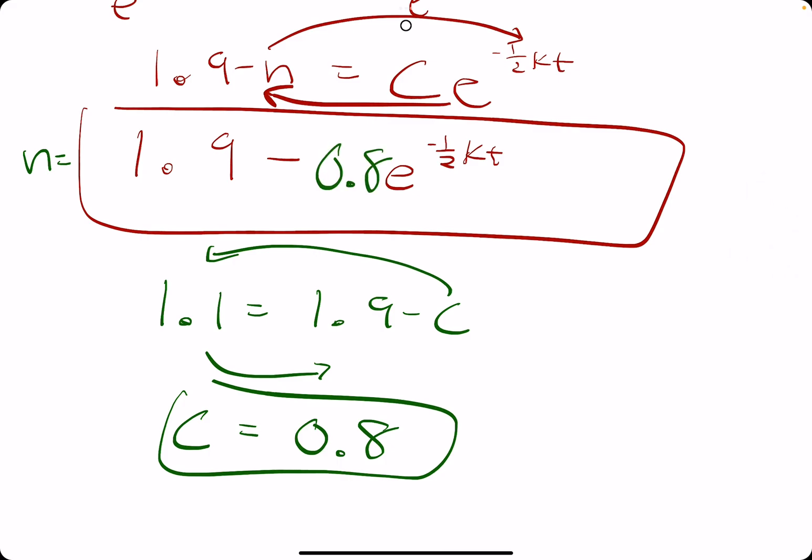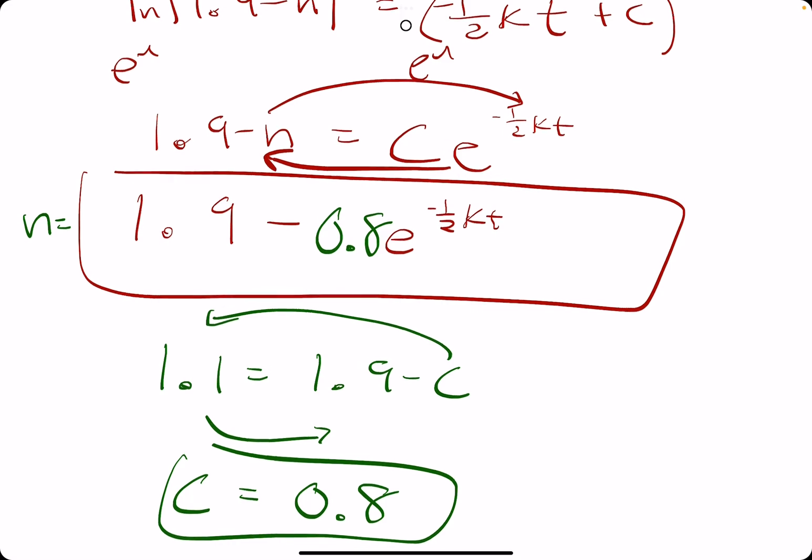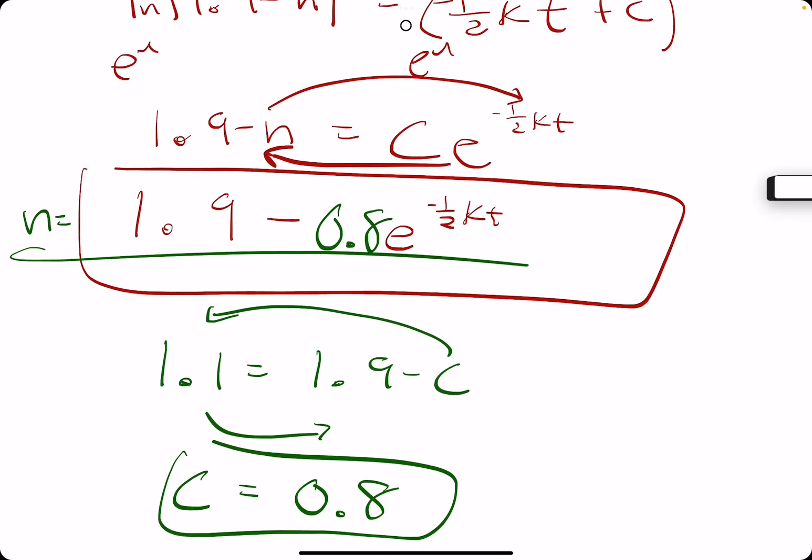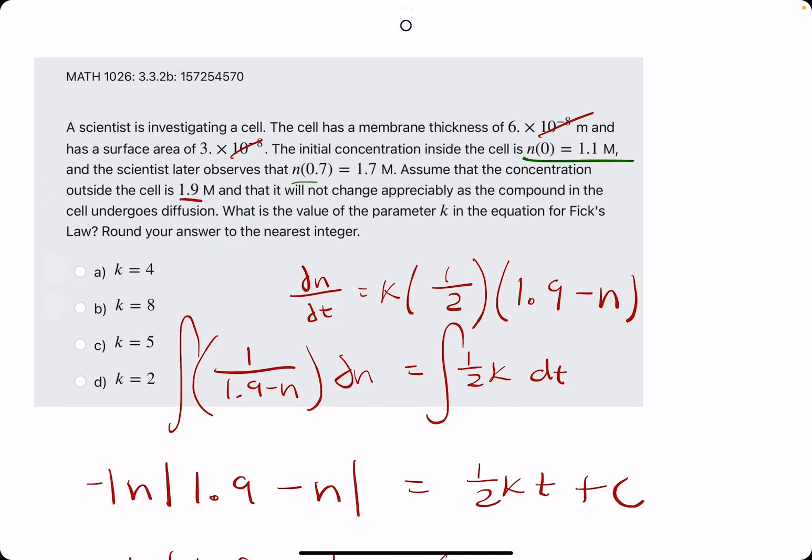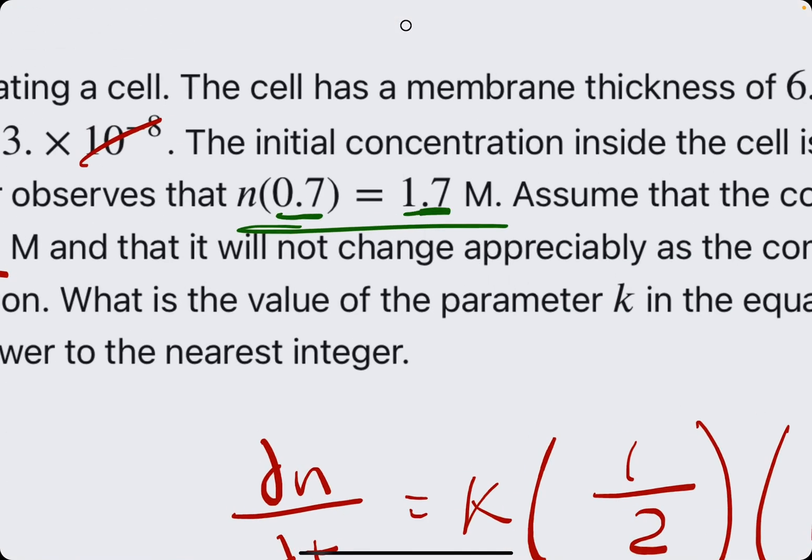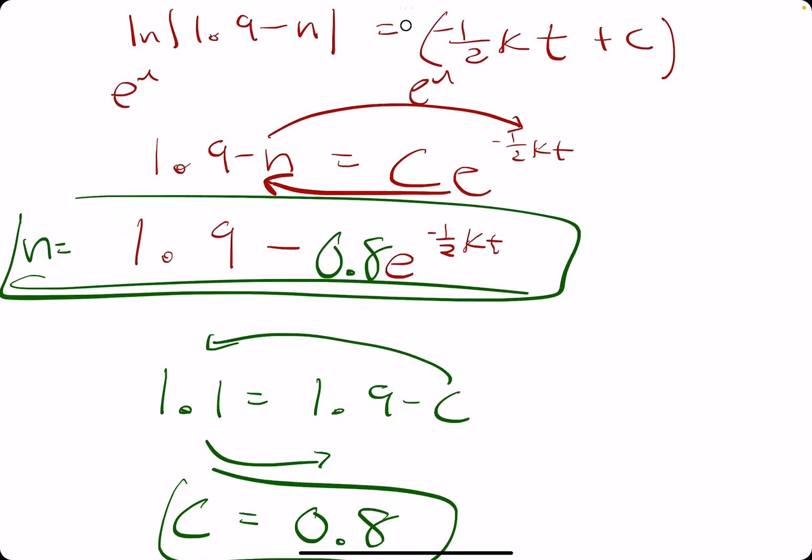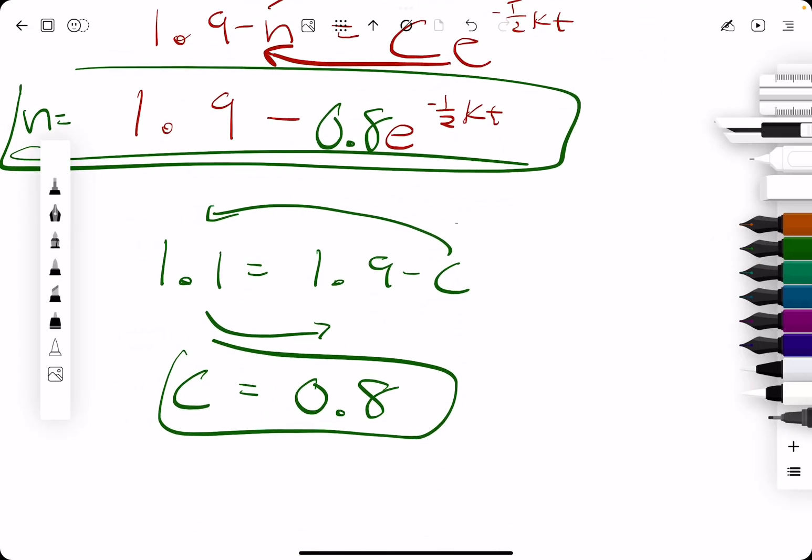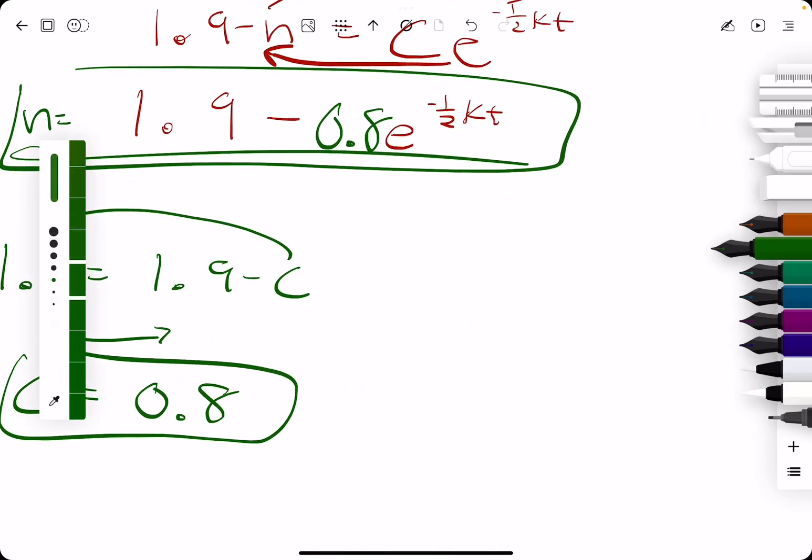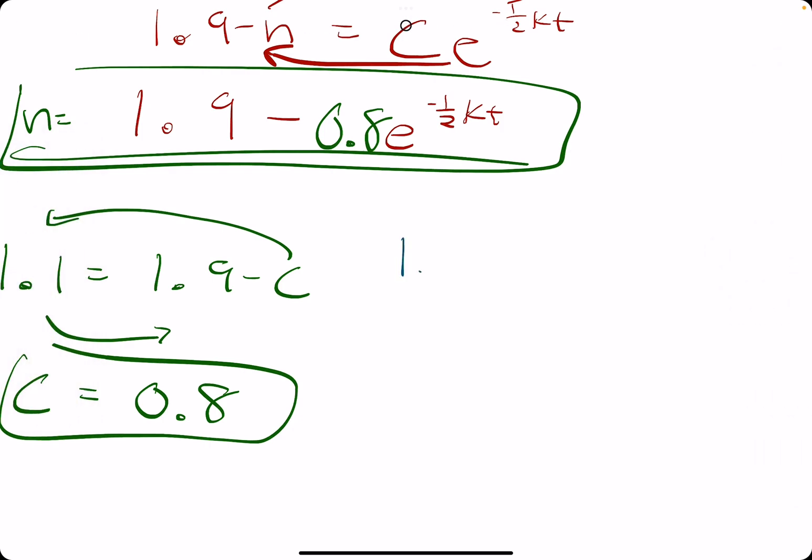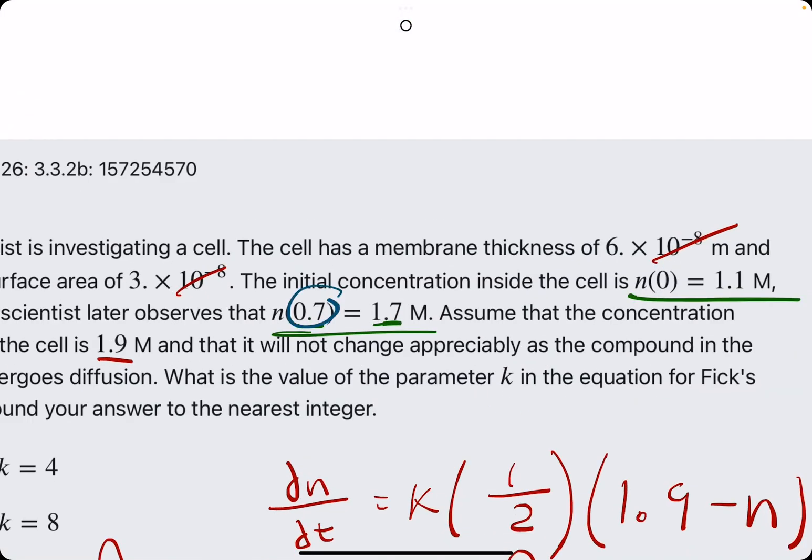So, we plug in 0.8 to take the place of C in the function n. And now, we plug in our last T equals 0.7 and n equals 1.7.